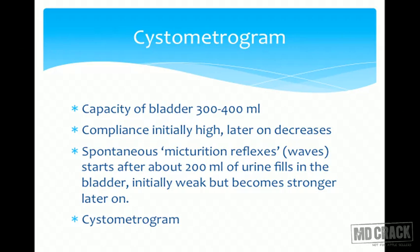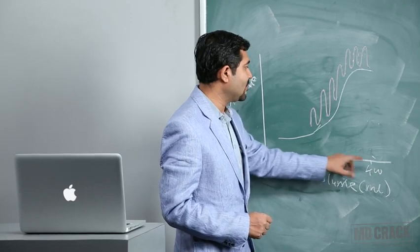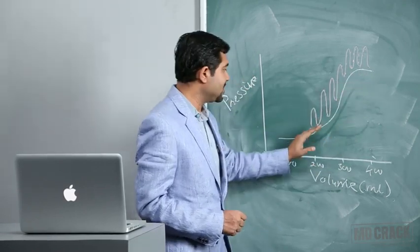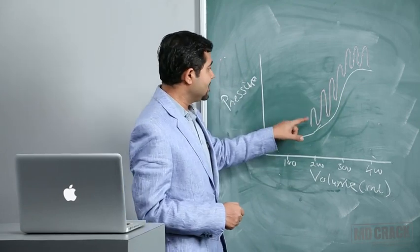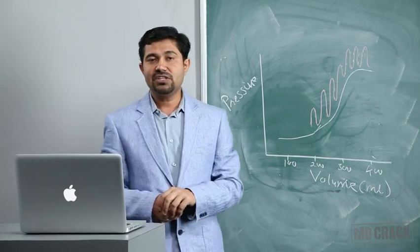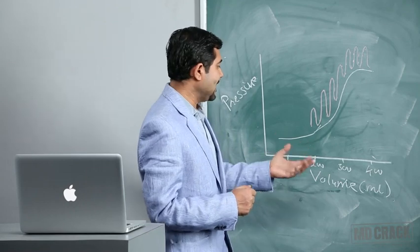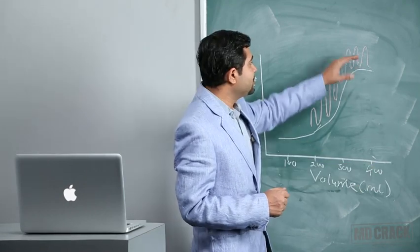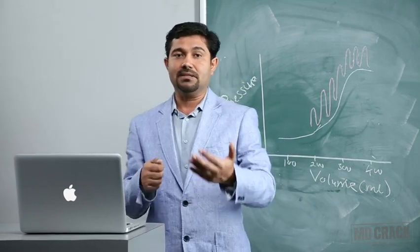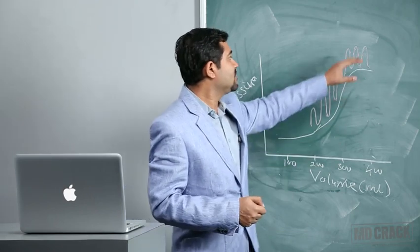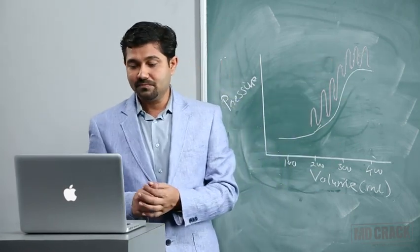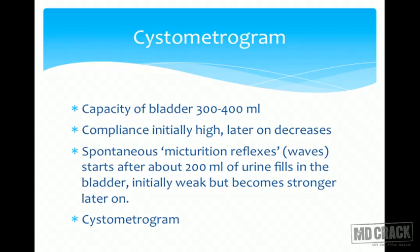Compliance means the change in pressure relative to volume. Initially, compliance is high — filling from 100 to 200 ml causes little pressure increase. But from 200 to 400 ml there is a sharp pressure increase, and micturition waves are generated. These spontaneous micturition waves start generating after about 200 ml of urine is filled into the bladder.